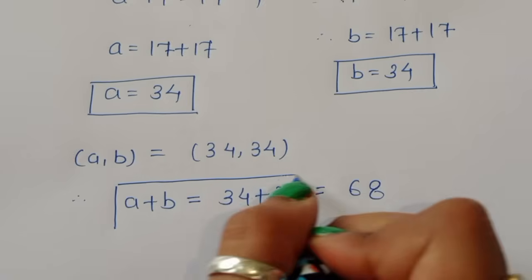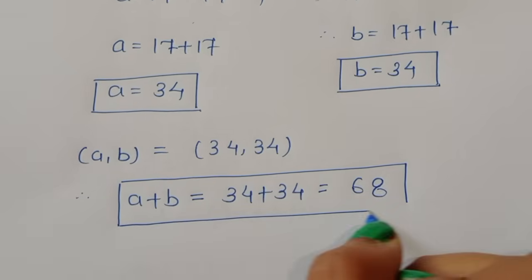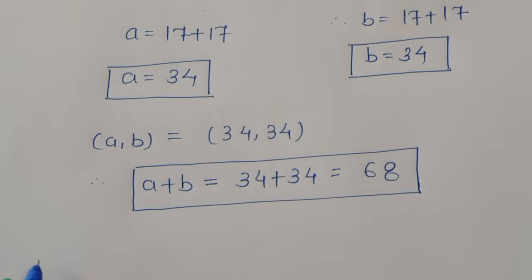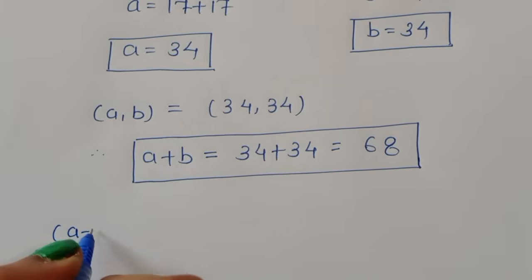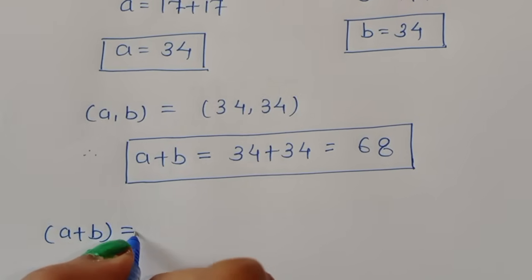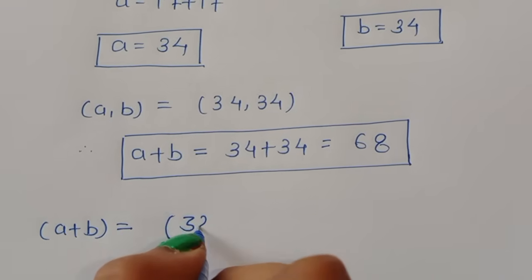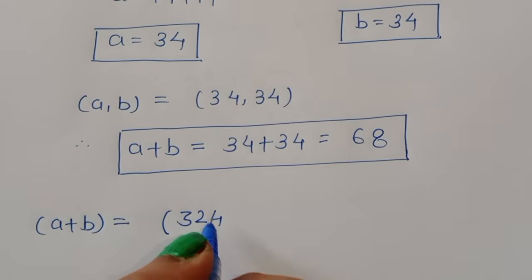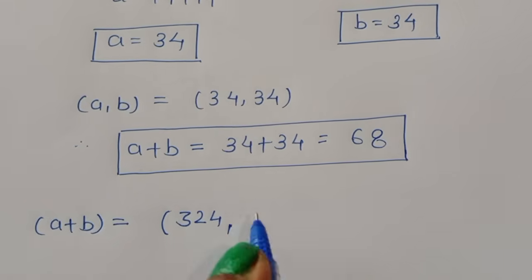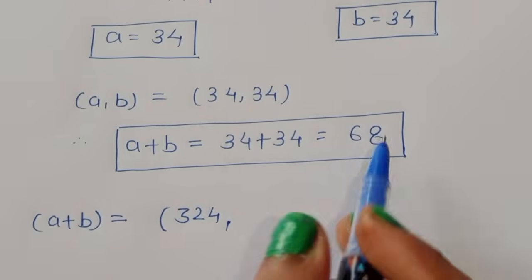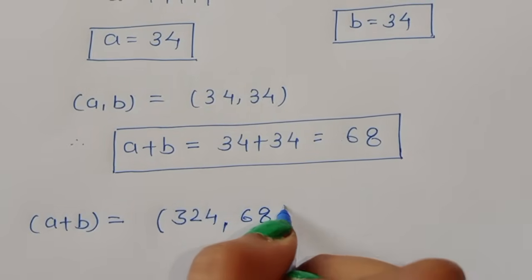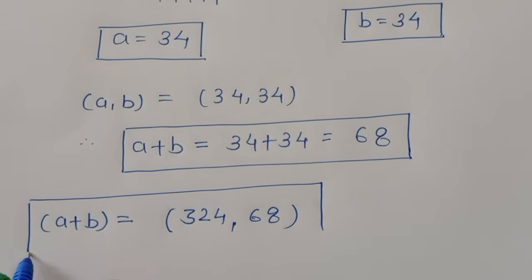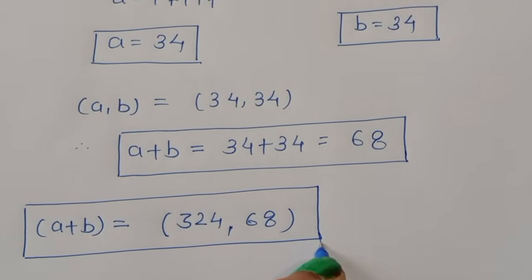In summary: from Case 1 and Case 2, a + b = 324, and from Case 3, a + b = 68. These are the complete solutions for this equation. Thank you.